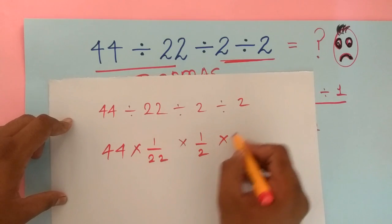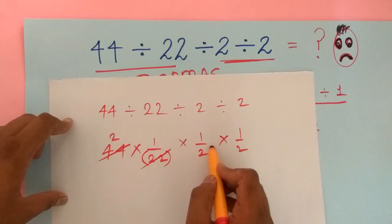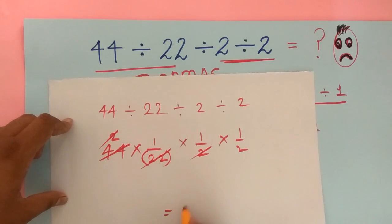1 over 2, 1 over 2, and here 22 to 22 getting cancelled, we are left with 1 over 2.